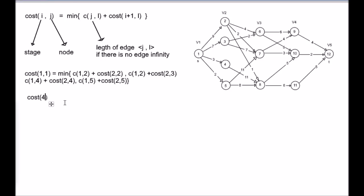Cost(4,9) is equal to, since there is only one path from 9 to 12, there is no need of a minimum function. C(9,12) plus, since this is the last stage, the cost function is not there, which is equal to 4. Similarly, cost(4,10) is equal to C(10,12), which is equal to 2.